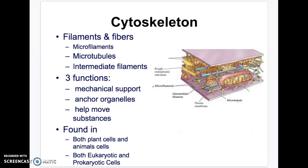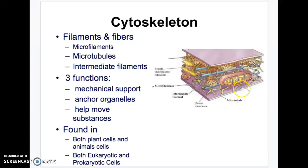The cytoskeleton — ask yourself, what does your skeleton do? It provides structure and support, and that's what a cytoskeleton does in a cell. It has all these different filaments and tubes that support and anchor the organelles. You can see a mitochondria that's been anchored, so everything's not just free-floating around inside your cell. Everything's anchored down by these cytoskeleton tubes and filaments. It's found in all types of cells — plants and animals, prokaryotes and eukaryotes.